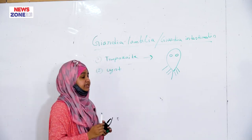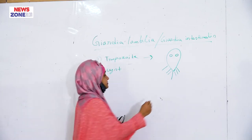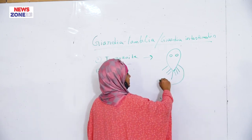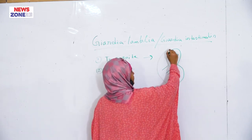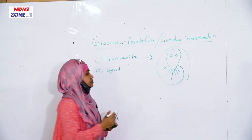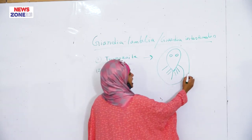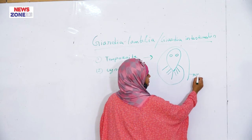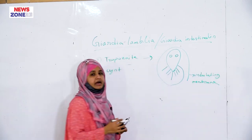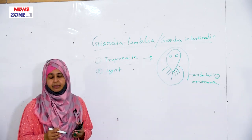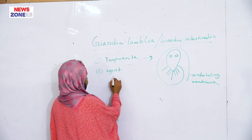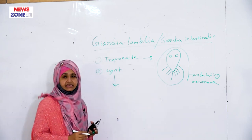One of the flagella, which is the longest, runs around the membrane and it is called the undulating membrane.